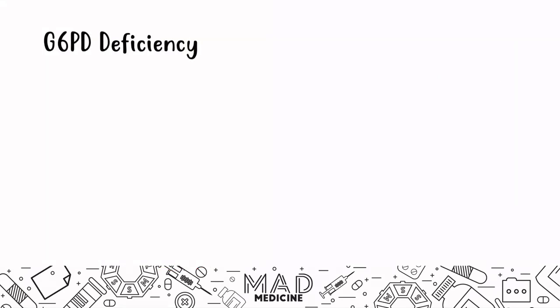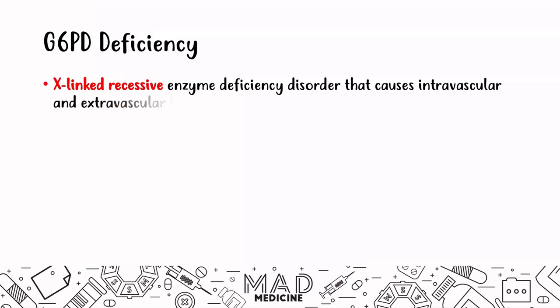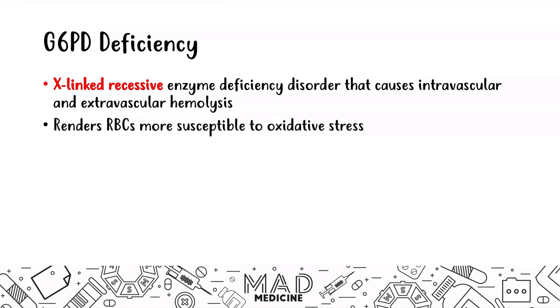Let's talk about G6PD deficiency. This is an X-linked recessive enzyme deficiency disorder that leads to intra- and extravascular hemolysis because it renders the red blood cell more susceptible to oxidative stress. It's very important that this is X-linked recessive, because you could be asked about the probability of someone inheriting this disorder from their parents.